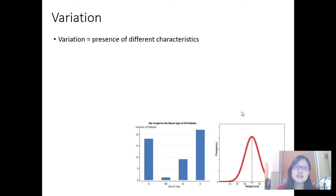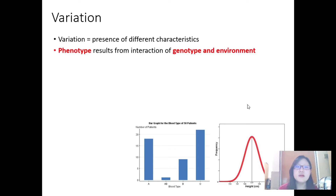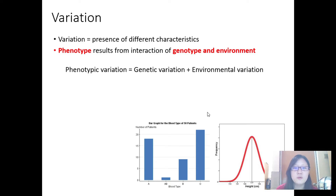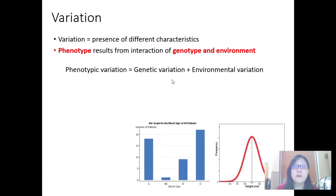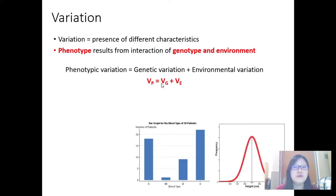What is variation? Variation is the presence of different characteristics, and characteristics are also known as phenotype. Phenotype results from an interaction of genotype and environment. Phrased as a formula: phenotypic variation (VP) equals genetic variation (VG) plus environmental variation (VE). So phenotypic variation is the result of differences in your genes and the different environments you are exposed to.